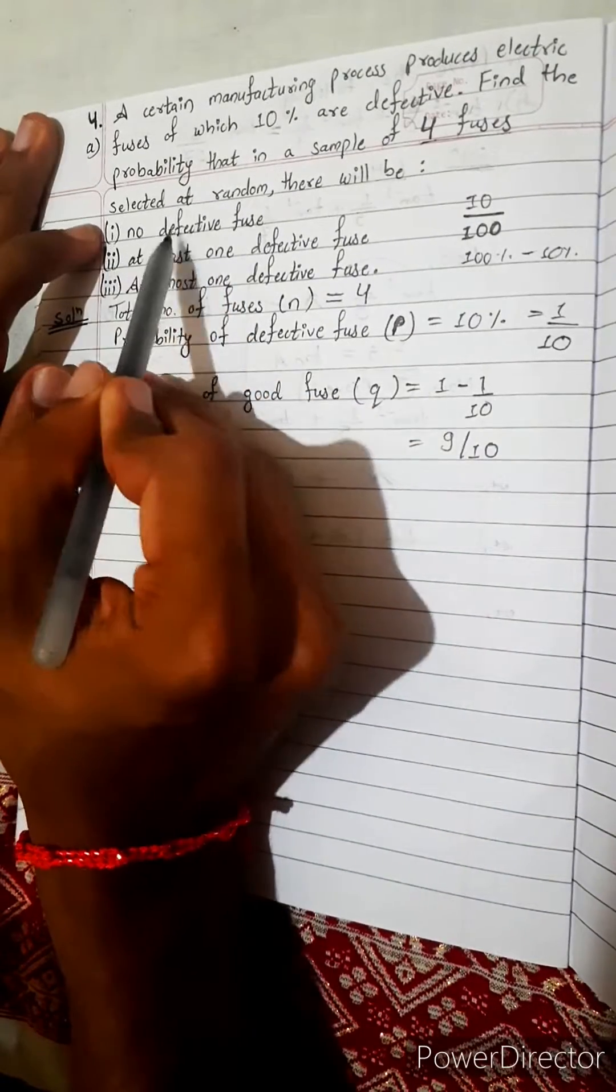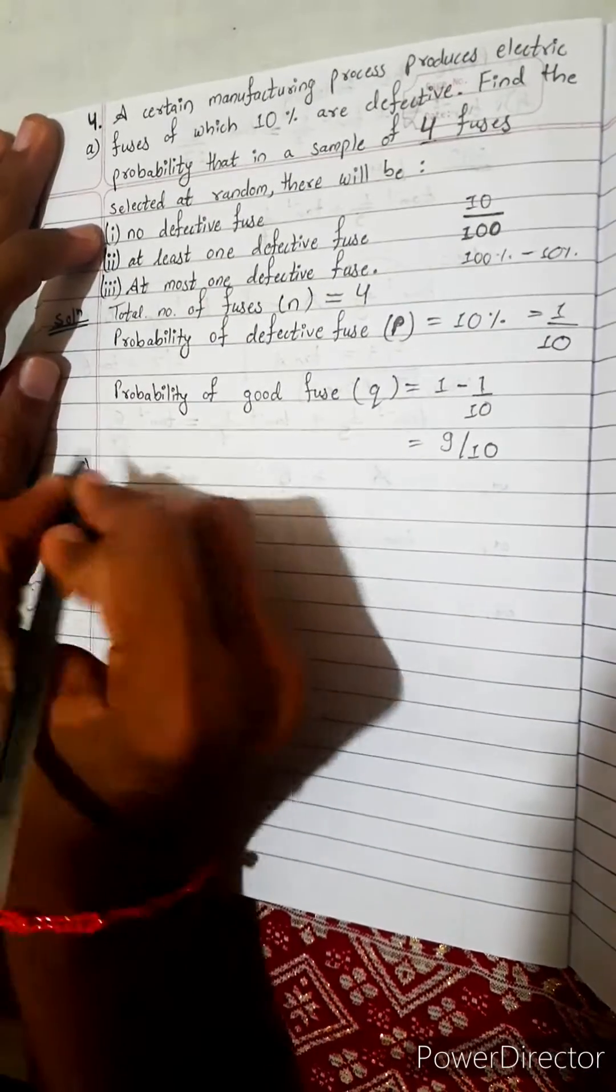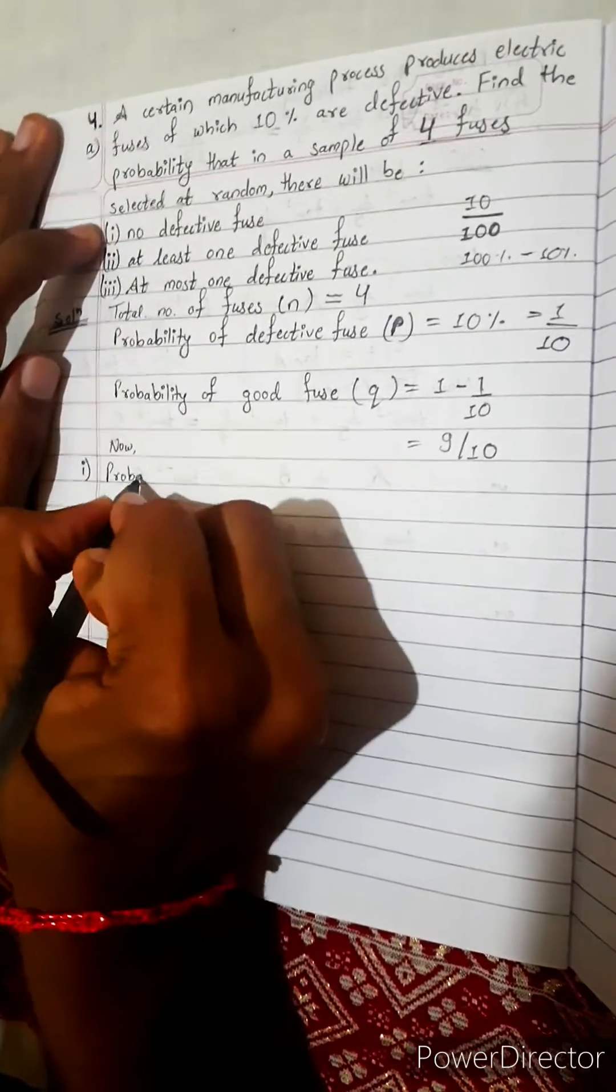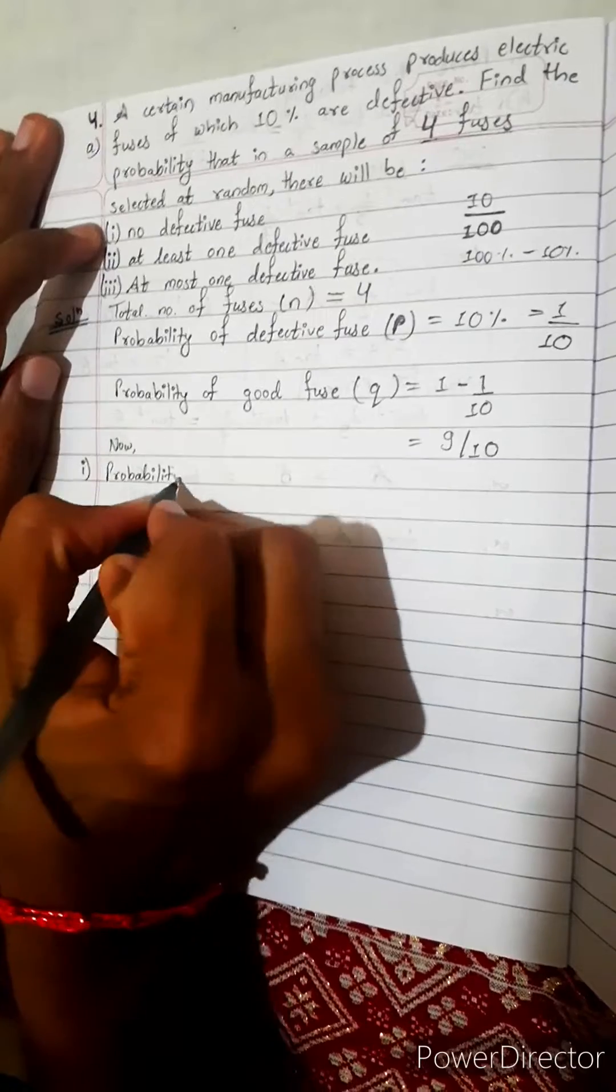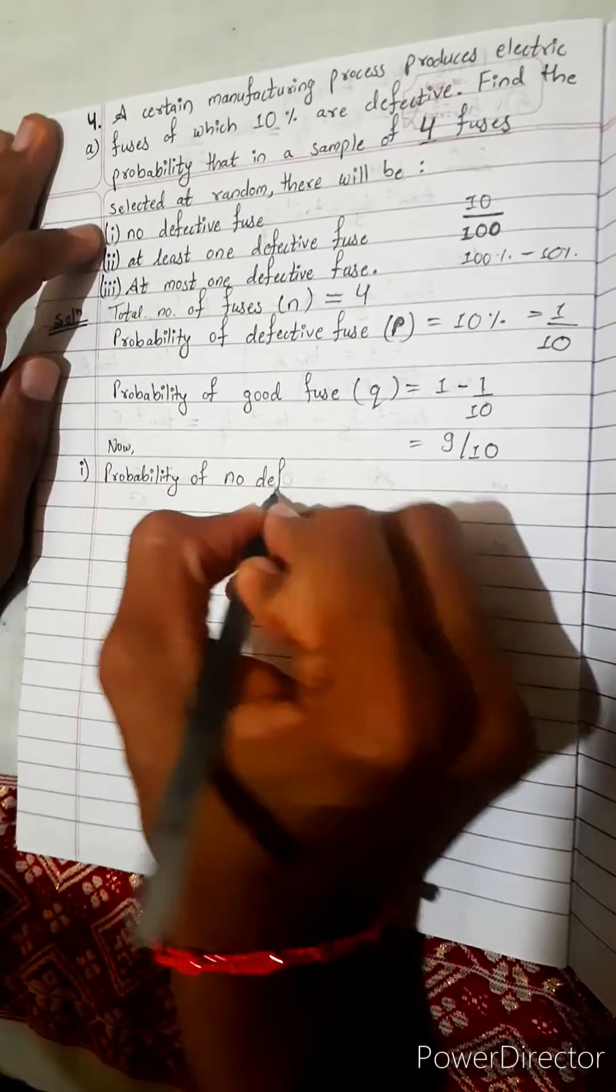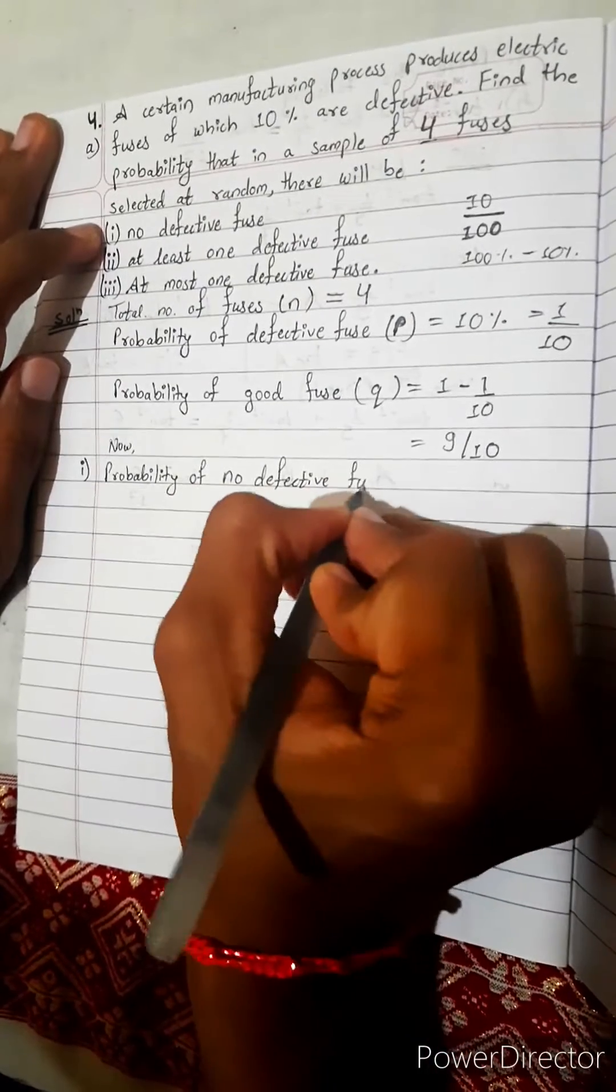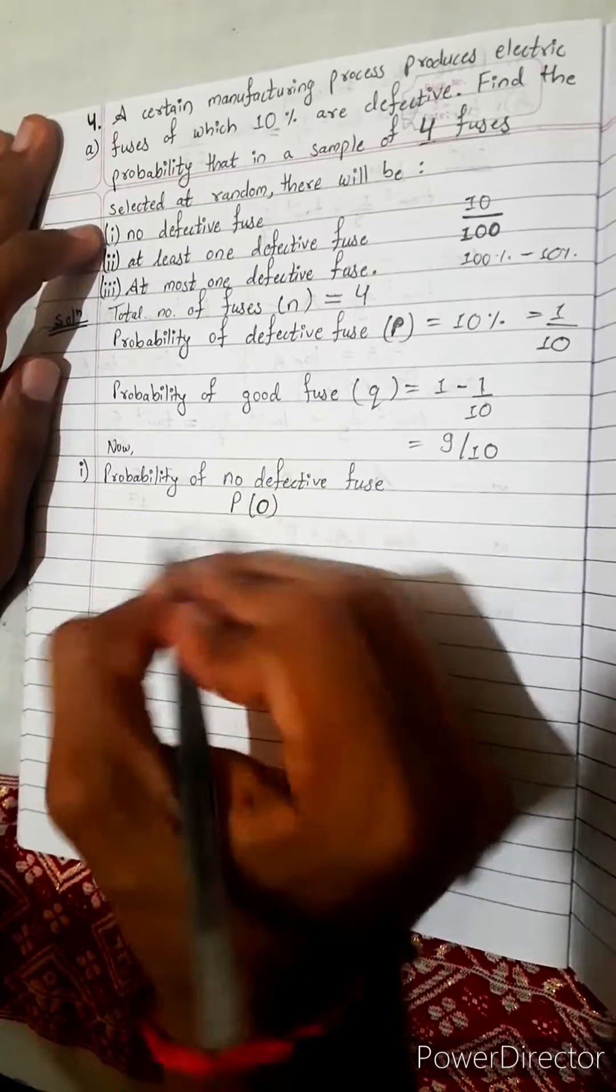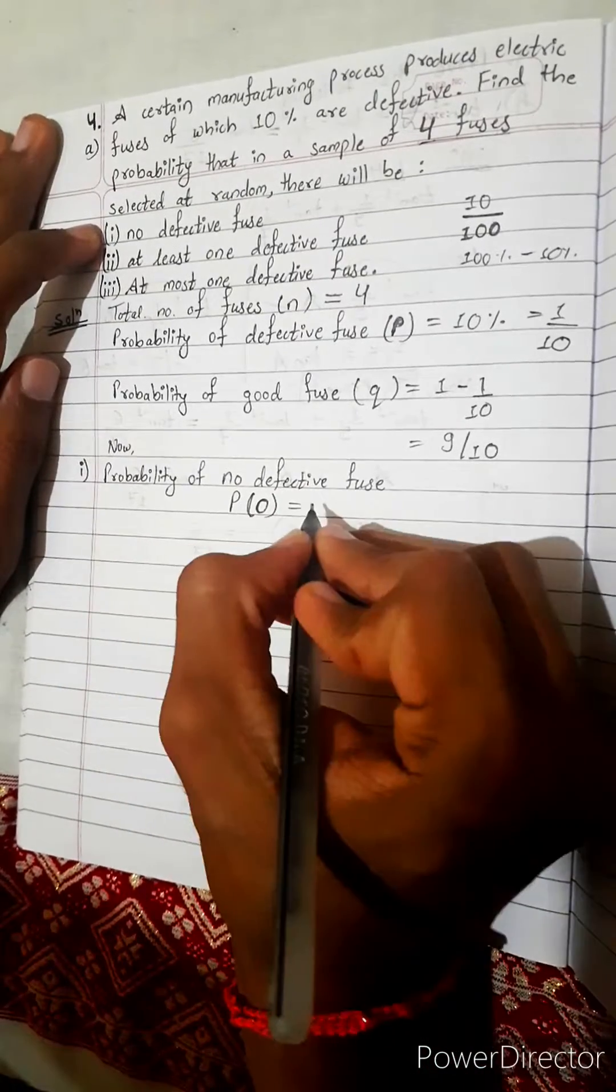What is it asking? Probability of no defective fuse, which means probability of 0 defective fuse. No means 0.